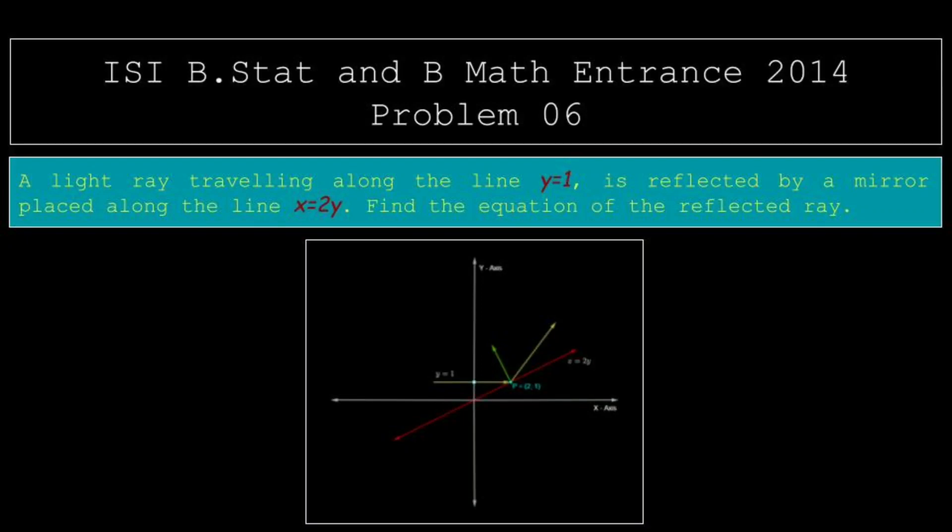This is ISI B-STAT and B-MATH entrance 2014 problem number 6. A light ray traveling along the line y=1 is reflected by a mirror placed along the line x=2y. Find the equation of the reflected ray.